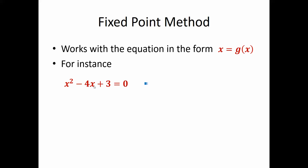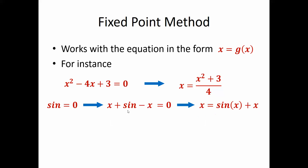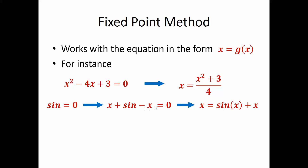You put x on one side and arrange the rest of the equation to have everything on the other side. For instance, if you have sin(x) = 0, you can write it as x + sin(x) − x = 0, so x − x cancels. You have the equation in the form x = g(x). That's what we want.